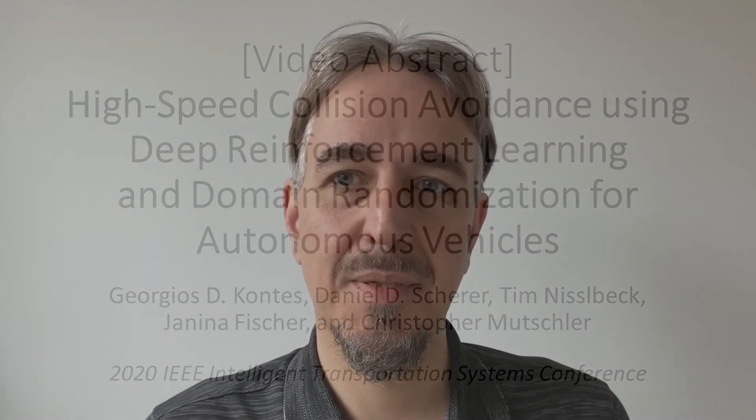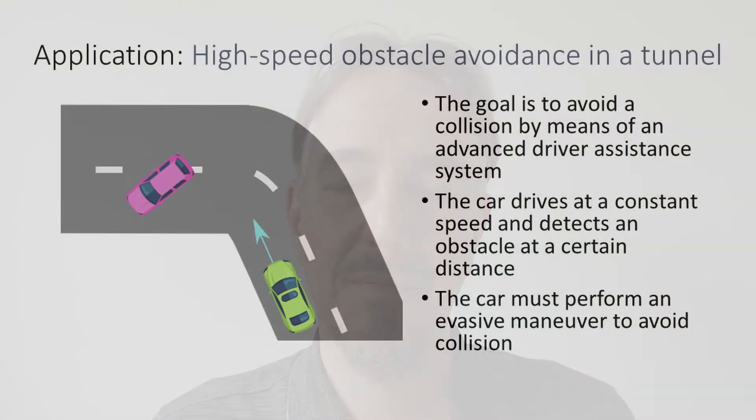Hi, my name is Axel Plinge. I'm here to introduce the paper 'High-Speed Collision Avoidance Using Deep Reinforcement Learning and Domain Randomization for Autonomous Vehicles', written by Georgi Scottes, Daniel Scherer and colleagues and published in the 2020 IEEE Intelligent Transportation Systems Conference. In this work, the critical application of high-speed collision avoidance is addressed. The goal is to avoid a collision by means of an advanced driver assistance system.